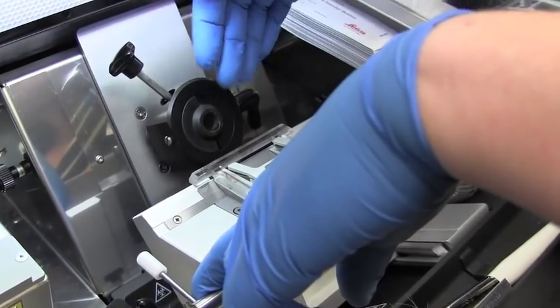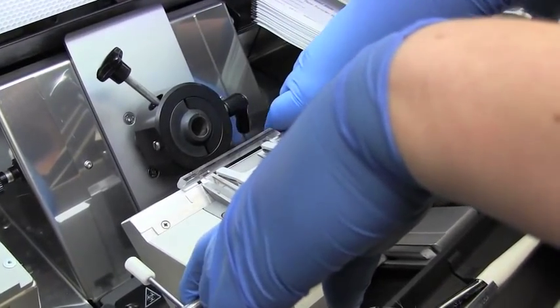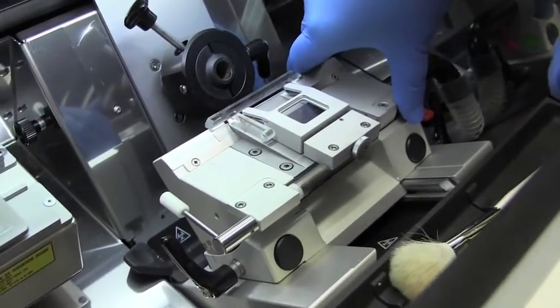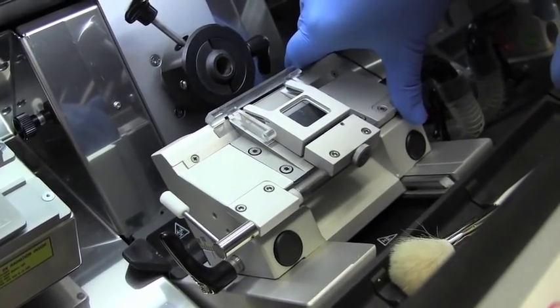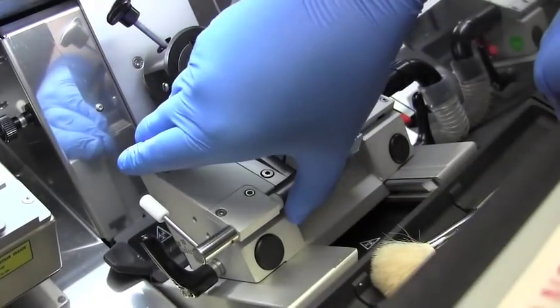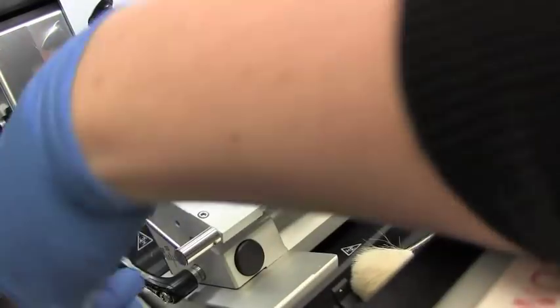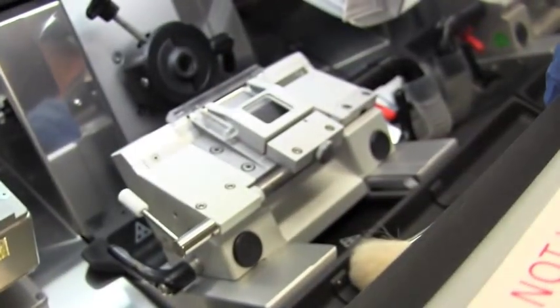So the angle at which the blade strikes the sample is important to making a clean cut. So we like to have it around 10. You can just turn it and set it like that. And then clamp down with this black bar.